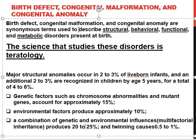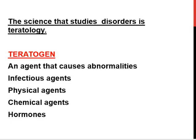One important point: congenital malformations are birth defects used to describe structural, behavioral, functional, and metabolic disorders present at birth. The science that studies these disorders is called teratology, and the agents that cause these disorders are called teratogens — including infectious agents, physical agents, chemical agents, and hormones.